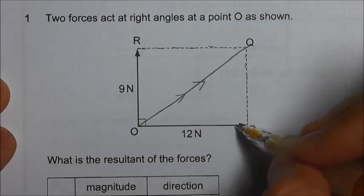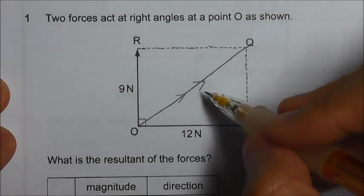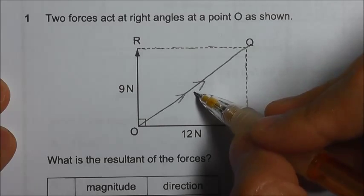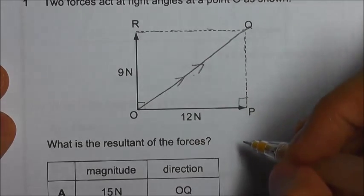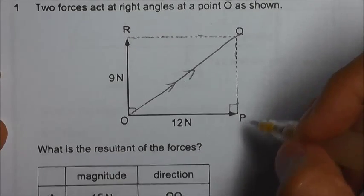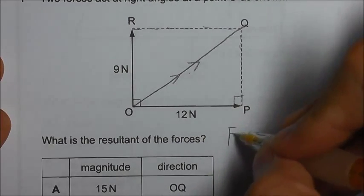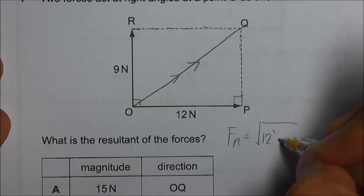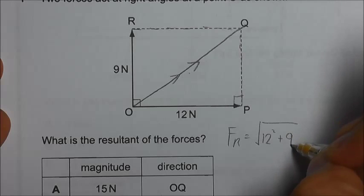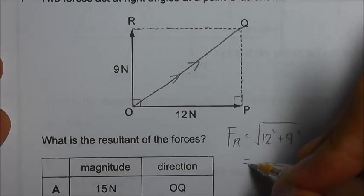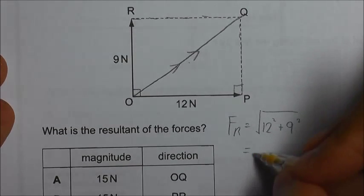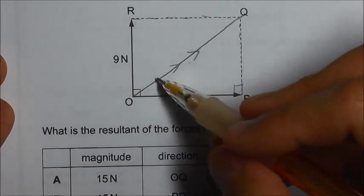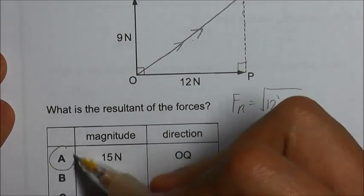So this is a right angle triangle. The magnitude of this resultant force is actually the hypotenuse. So what we can do is use the Pythagoras theorem. Resultant force is equal to square root of 12 square plus 9 square. So we get the answer as 15 Newton OQ. Answer A.